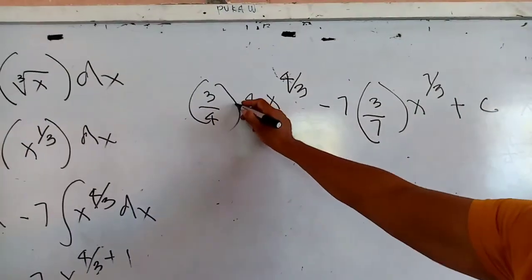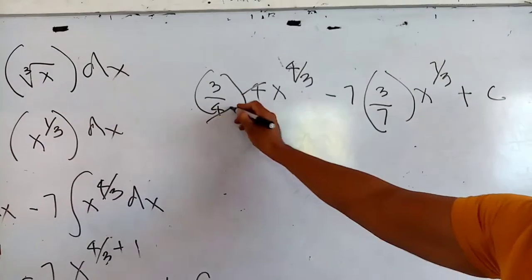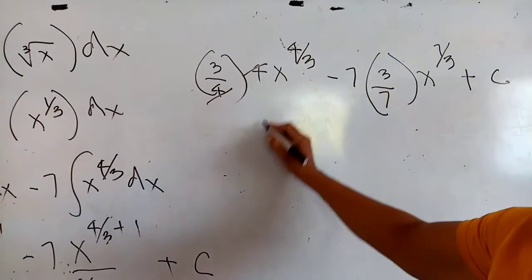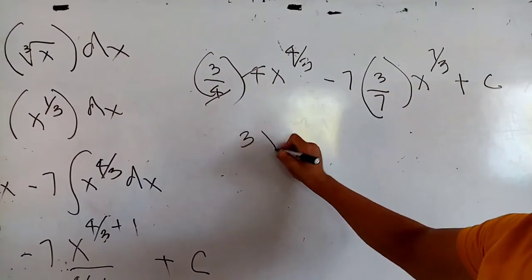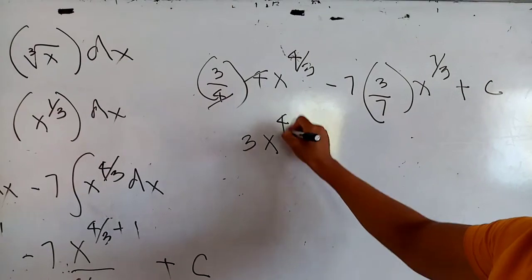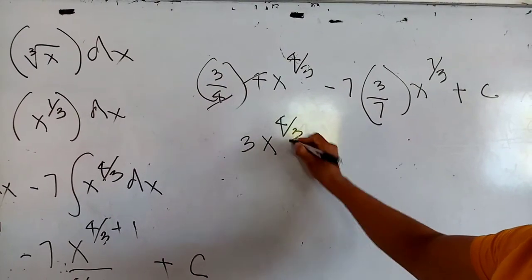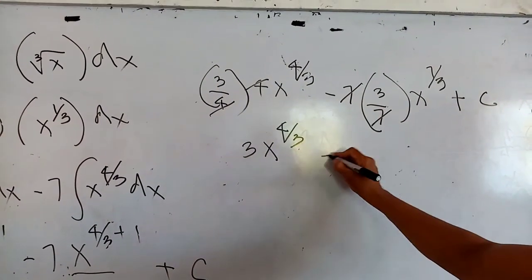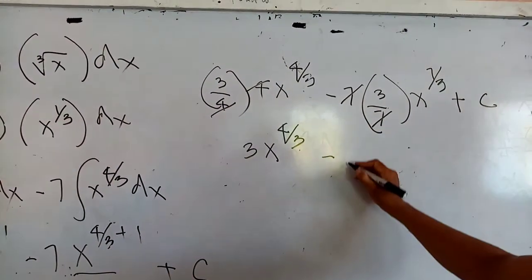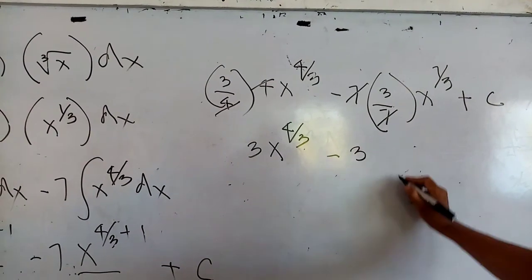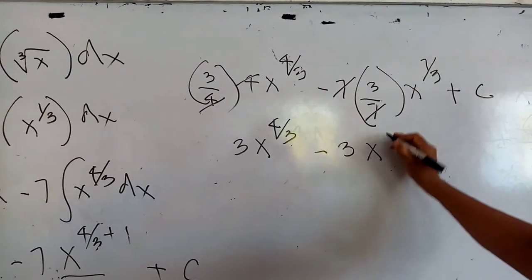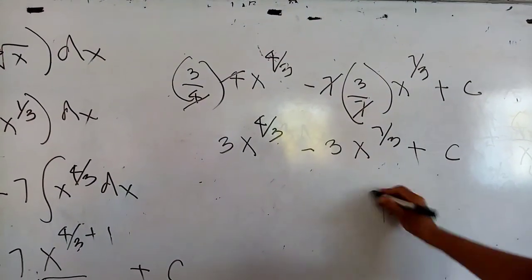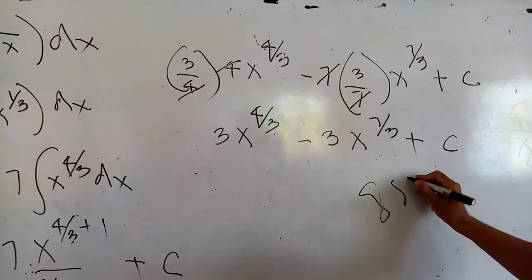I divide 4 from 4 — where the product now will be 3 times x raised to the four-thirds — divided by 7 from 7, will give us minus 3 times x raised to the seven-thirds, plus the constant of integration c.